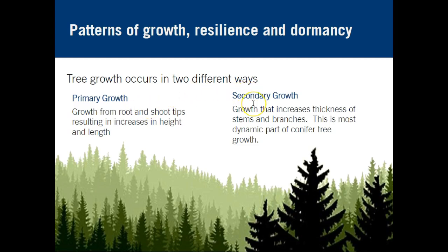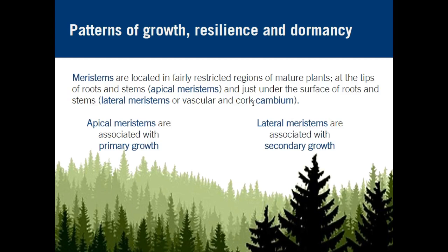Secondary growth refers to the increasing thickness of stems and branches. Meristems are tissues that occur in these areas of primary and secondary growth. At the tips of roots and stems, you have apical meristems — associated with primary growth, so the lengthening of roots and the stem. Just under the surface of roots and stems or branches, you have lateral meristems, right under the cortex cambium. This is the area of secondary growth.